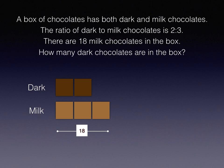We want to start with the given information about 18 milk chocolates. I noticed that in my diagram, the milk chocolates are represented by 3 blocks. So 18 divided by 3 means 6, so each one of these blocks represents 6 chocolates. Including the dark blocks, they are also 6 chocolates each. Therefore, the dark chocolates are a total of 6 times 2, or 12 dark chocolates in the box.